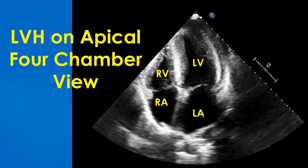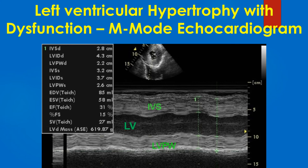Apical 4-chamber view showing left ventricular hypertrophy. The left atrium seems to be a bit dilated, probably secondary to LV diastolic dysfunction in LVH.